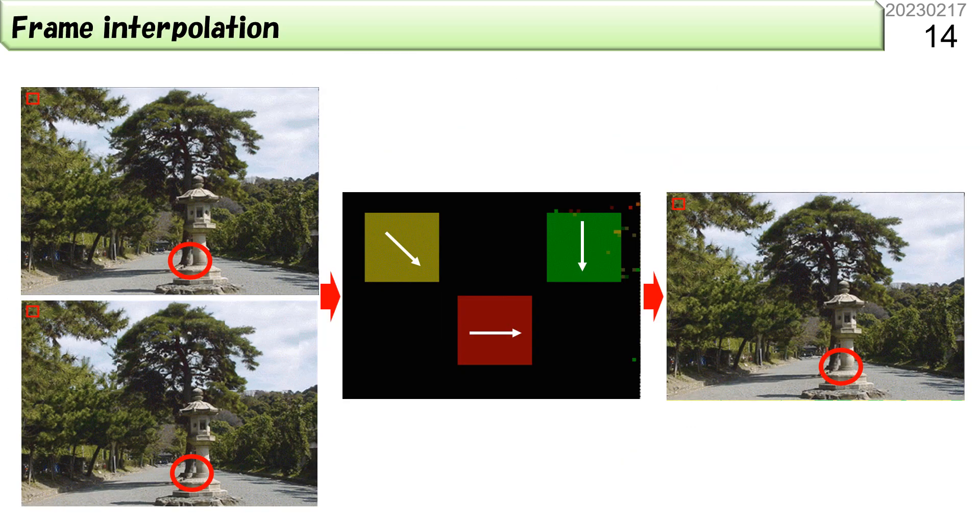The next one is frame interpolation. 60 frames per second video can be increased to 120 FPS. This image processing compares the upper and lower images, detects the moving area and direction, halves the amount of movement, and generates an interpolated image.